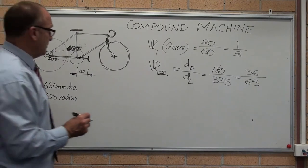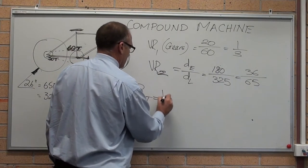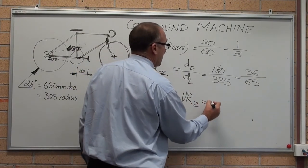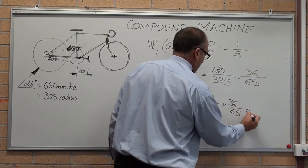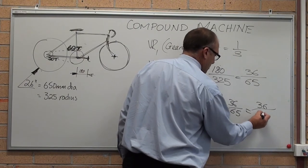So, our overall velocity ratio. Velocity ratio 1 times velocity ratio 2 equals 1 on 3 times 36 on 65 equals 36 on 195.